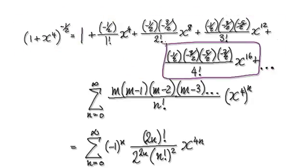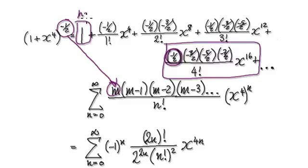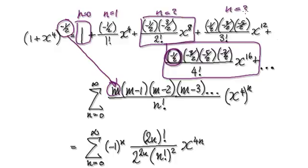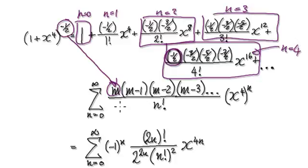Let's look at this one for example. You would start with a negative half — that's this negative half here — and then because this is n, n equals 0, n equals 1, n equals 2, this thing here is n equals 2, n equals 3, this thing here is n equals 3, and this thing here is n equals 4.